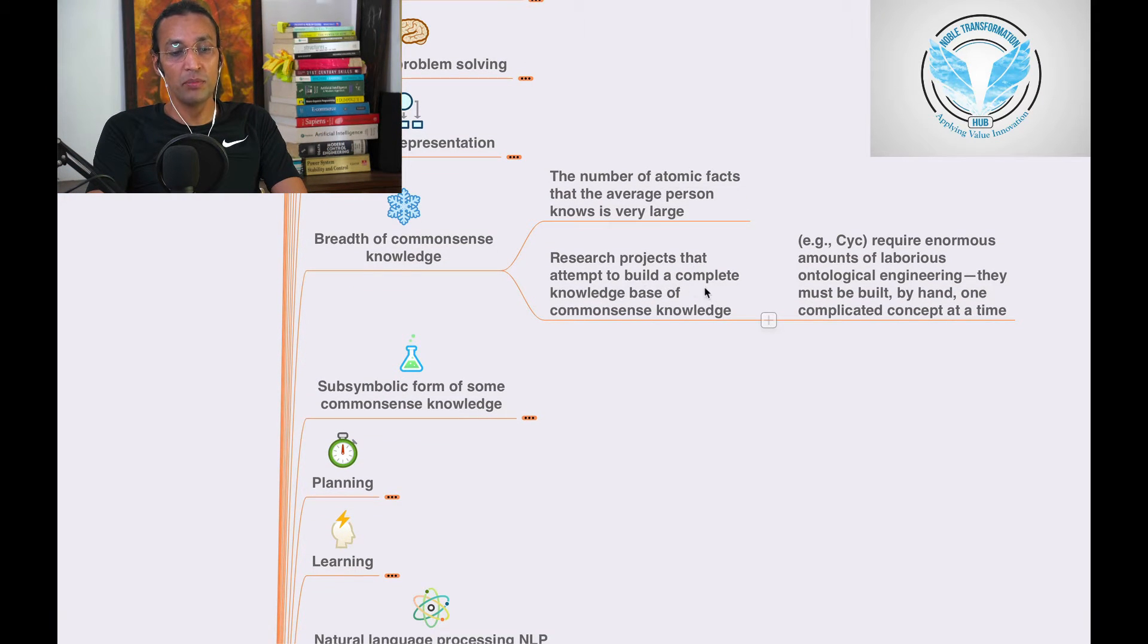Research projects that attempted to build a complete knowledge base of common sense knowledge, for example, requires enormous amounts of laborious ontological engineering that must be built by hand, one complicated concept at a time.